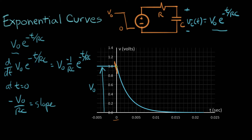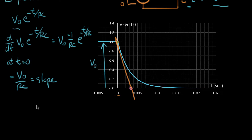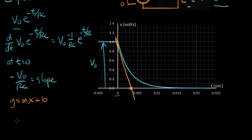Now the next thing I want to do is actually take this tangent line and extend it all the way down till it crosses the time axis. The next question we're going to ask is: what is that crossing point? So now we have a line — we've defined a line, which means we have an equation of a line. The equation of a line is Y equals slope times X plus B, where B is the intercept on the voltage axis and M is the slope.